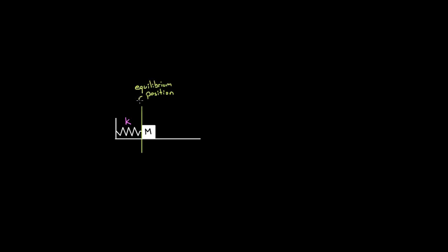What we mean by equilibrium position is the point where the net force on the mass is zero. For a mass on a horizontal spring, the equilibrium position is at the point where the spring is at its natural length, because the spring wouldn't be pushing to the right or the left. If you just put the mass there at that point, it would just stay there forever at rest.